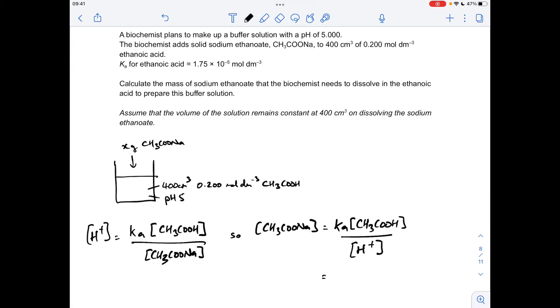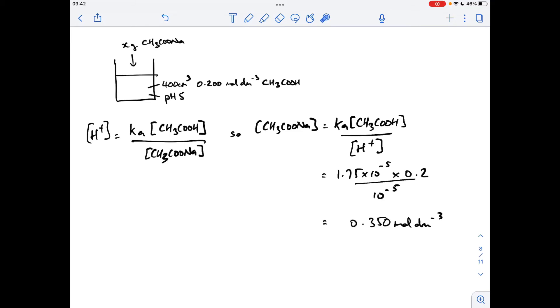So the Ka for the acid is 1.75 times 10 to the minus 5. The acid concentration was given in the question, 0.2 moles per decimeter cubed, and the H plus concentration is going to be 10 to the minus pH, so that's 10 to the minus 5. So the salt concentration is 0.350 moles per decimeter cubed.